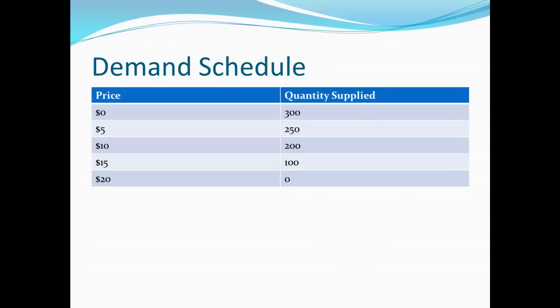Here we have a demand schedule. We'd imagine with the demand schedule that at very low prices, people would want to have a lot of the good. If we're giving away this good for free, people might want to take, say, 300 of them.